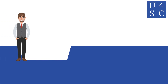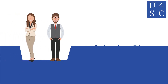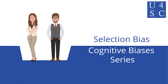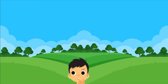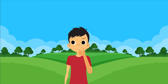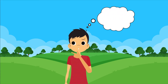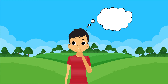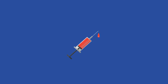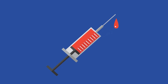Academy for Social Change presents Selection Bias. Have you ever wondered why some studies show results that just aren't consistent with reality? This can happen for many reasons, and one of them is when the subjects in the study don't actually represent the target population.